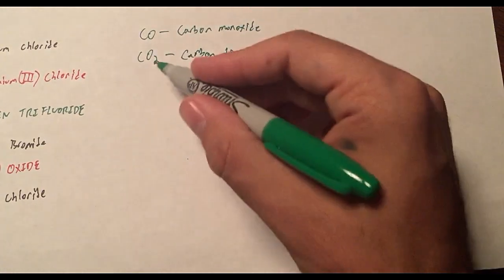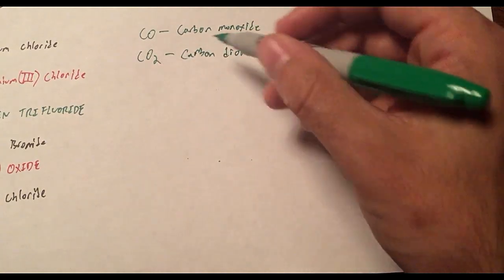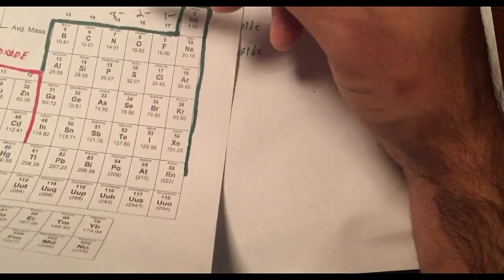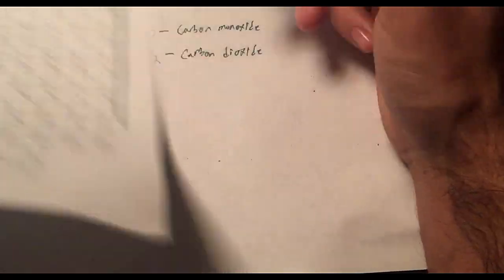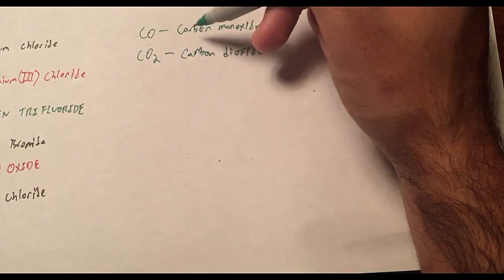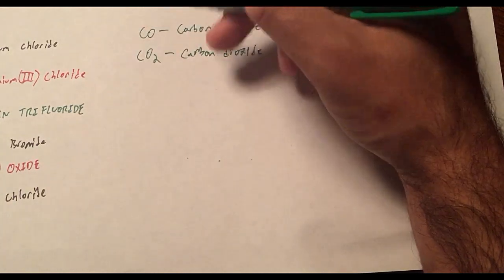And why is that? Well, because there are two oxygens, so di oxide. So in this case, in type tri, the prefixes represent how many of those atoms you have. CO2, I have two oxygens, dioxide. If I had more than one of the first atom, I would have to put that.